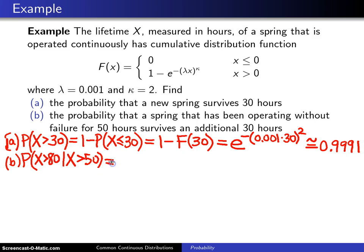Now, using the definition of conditional probability, the probability of A given B is the probability of the intersection of these two events, and the intersection of those two events is going to be the probability x is greater than 80, divided by the probability of the given event, and the given event in this case is x greater than 50.